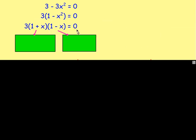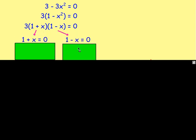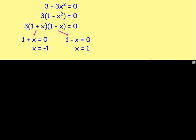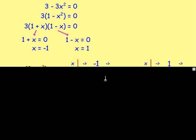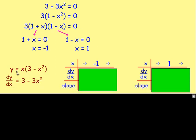Since it's equal to zero, either 1 plus x equals zero or 1 minus x equals zero, giving x equals negative 1 or x equals positive 1. These are the x-coordinates of our stationary points. We need the y-coordinates and we need to know if each is a maximum, minimum, or point of inflection — and for that we use the nature table. So we started off with y equals x(3 minus x squared) and that is the derivative.